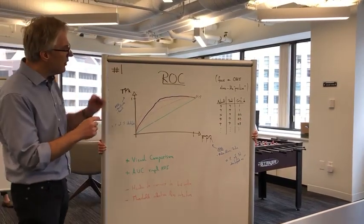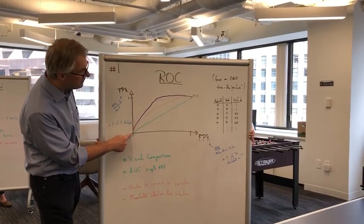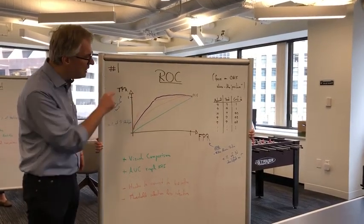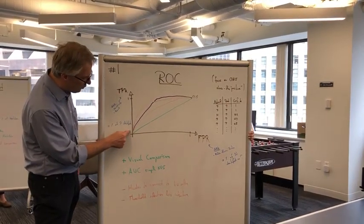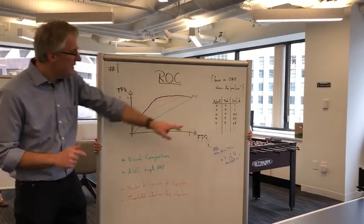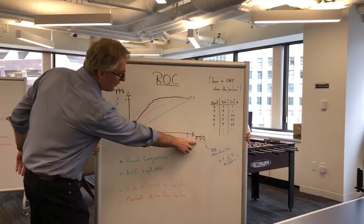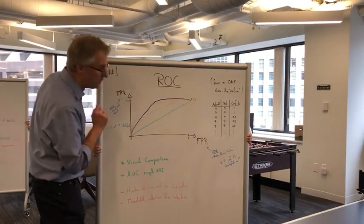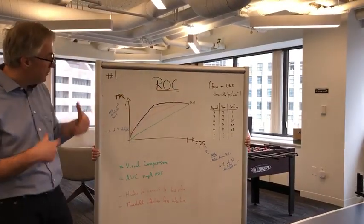And then you start basically going line by line. You start here at the bottom left corner, and if it's actually a positive and we correctly say it's a positive, that means this adds to your true positive rate. So we go one step up, same for the next row here, one step up. But here now, this is actually a negative and we say it's a positive, so that's a false alarm, so we go one step to the right. And you do this for all your data points, and then a curve like this will appear.